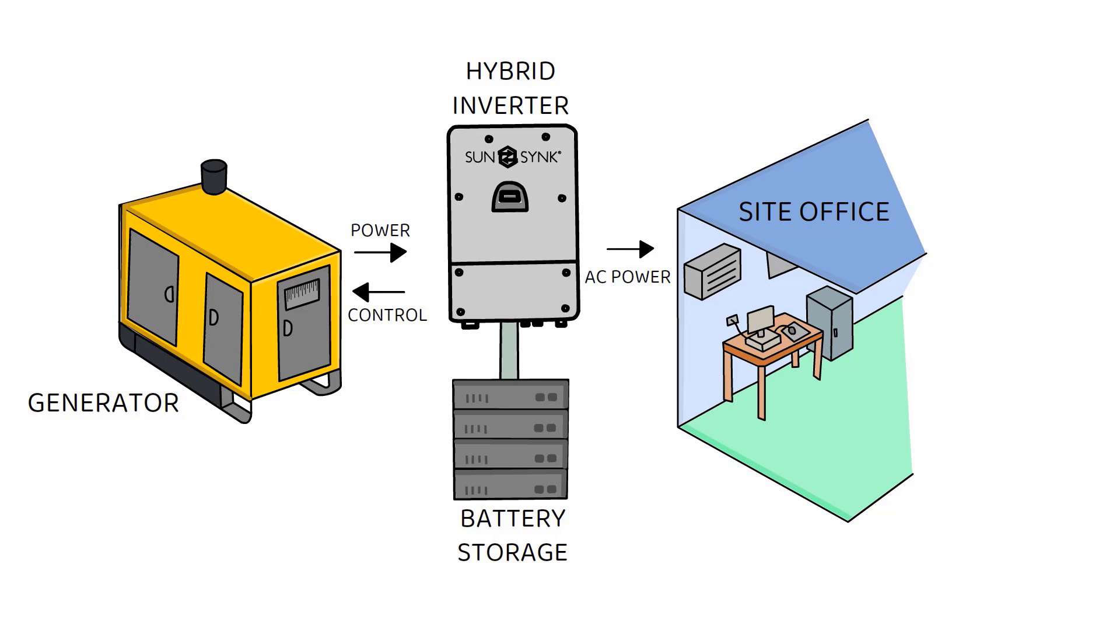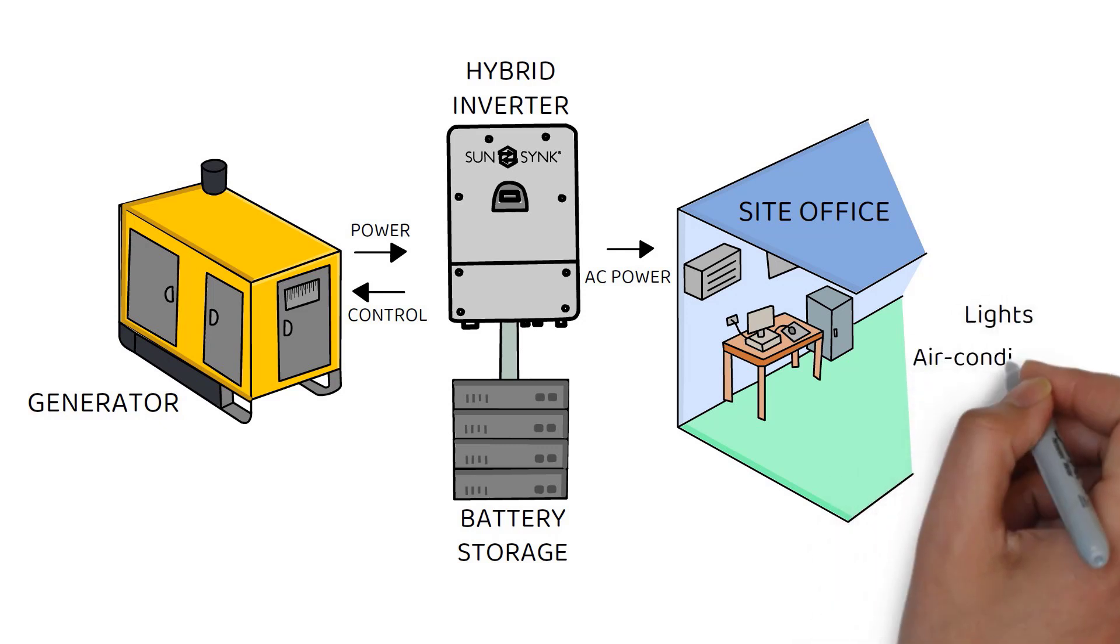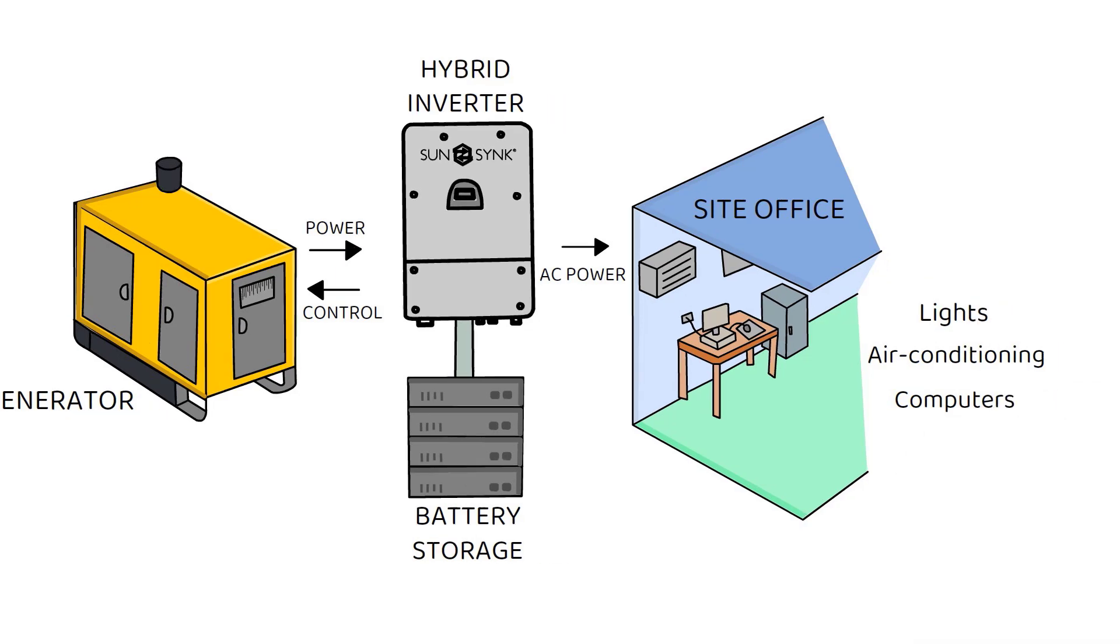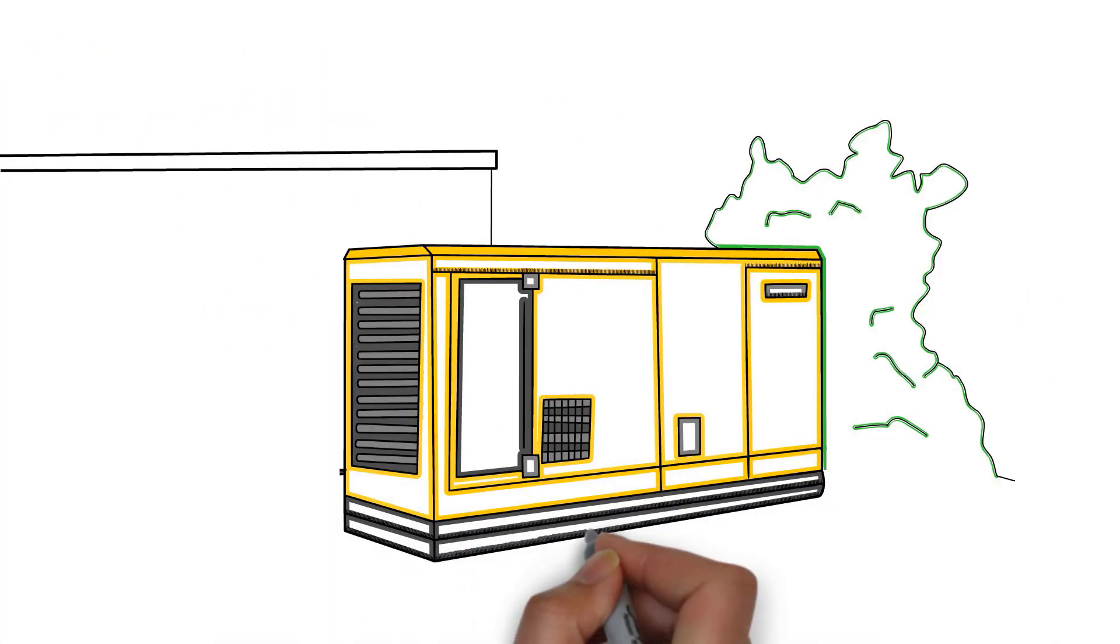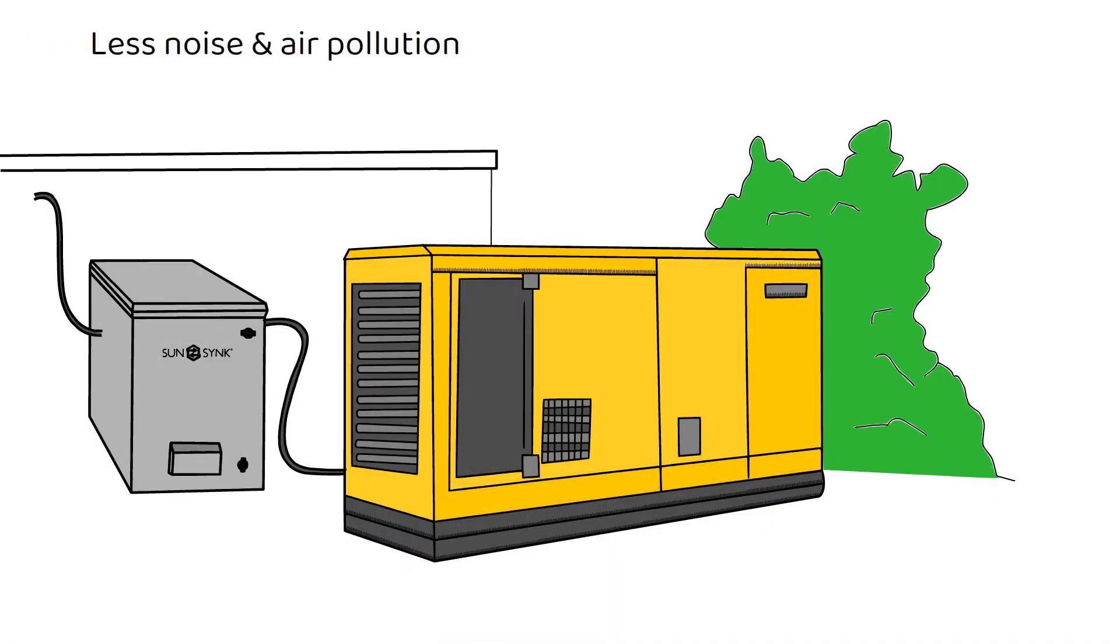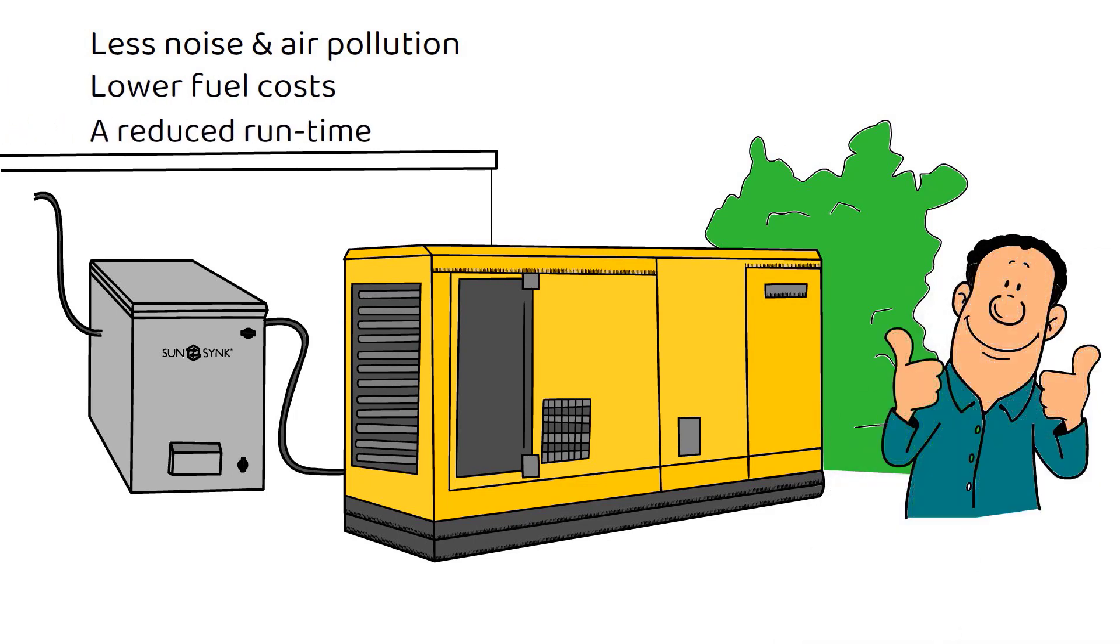the inverter automatically turns off the generator and all appliances such as lights, air conditioning and computers run off stored electricity. This setup reduces generator runtime, resulting in less noise and air pollution, lower fuel costs, and extended periods between servicing.